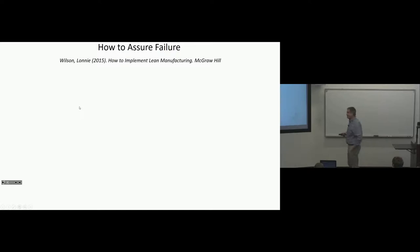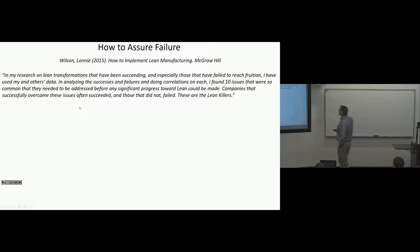In my research on lean transformations that have been succeeding and especially those that have failed to reach fruition, I have used my and other data, analyzing the successes and failures and doing correlations on each. I found 10 issues that were so common that they needed to be addressed before any significant progress towards lean could be made. Companies that successfully overcame these issues often succeeded and those that did not fail. These are the lean killers. This is from his perspective of years and years of lean transformation.